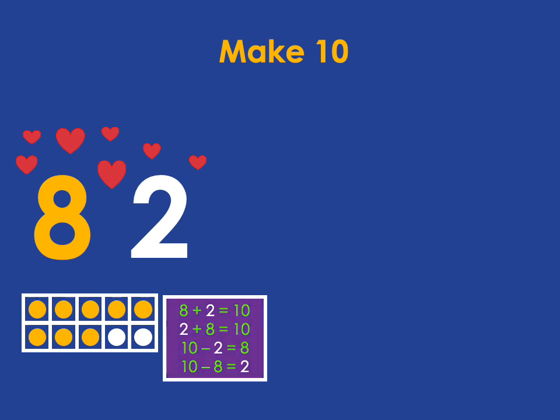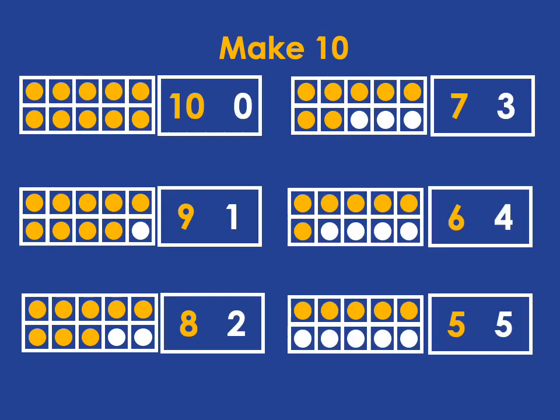So just knowing that 8 and 2 are the pair lets us get all those other facts. This means that all you have to learn is this set of facts here, and once you know these facts, you know all those addition and subtraction calculations.